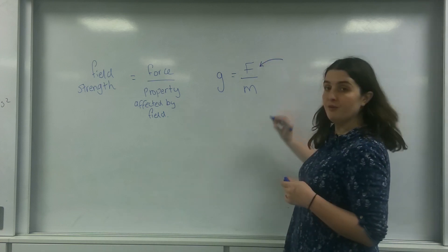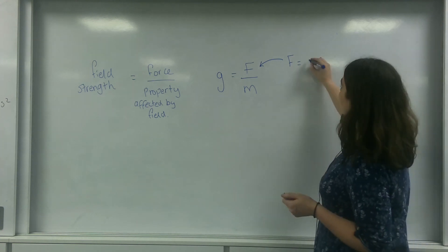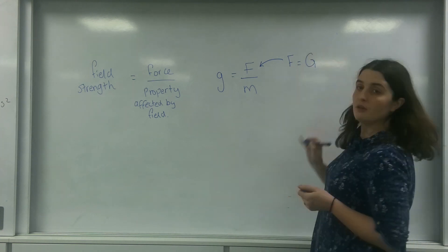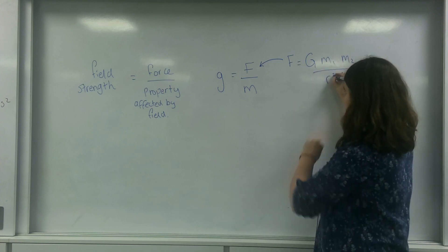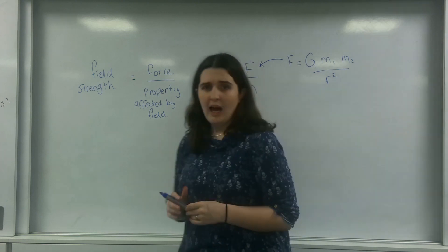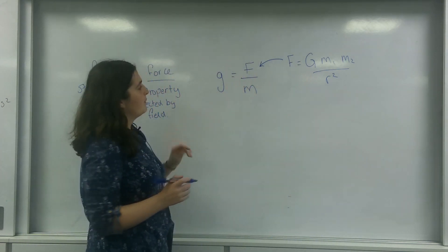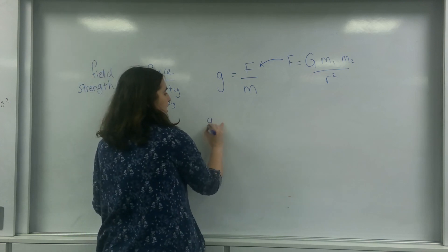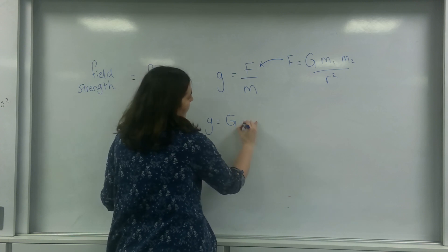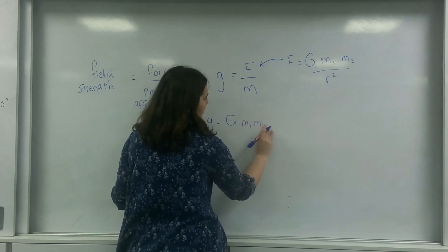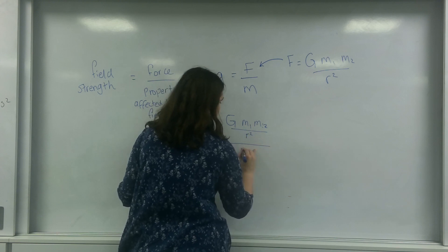So in a radial field, that force is represented by Newton's law of gravitation: F equals big G, the gravitational constant, times M1 times M2 over R squared. What this means is I can put this formula in here and I end up with: g equals big G times M1 times M2 over R squared, all over M.